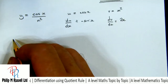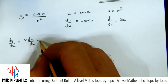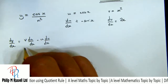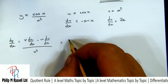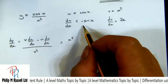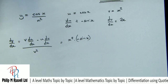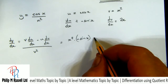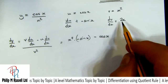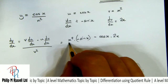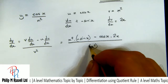Writing down the quotient rule: dy/dx = v(du/dx) minus u(dv/dx), all over v squared. Substituting in: v is x² times (minus sin x), minus u which is cos x times dv/dx which is 2x, all divided by v squared which is (x²)² giving x to the 4.